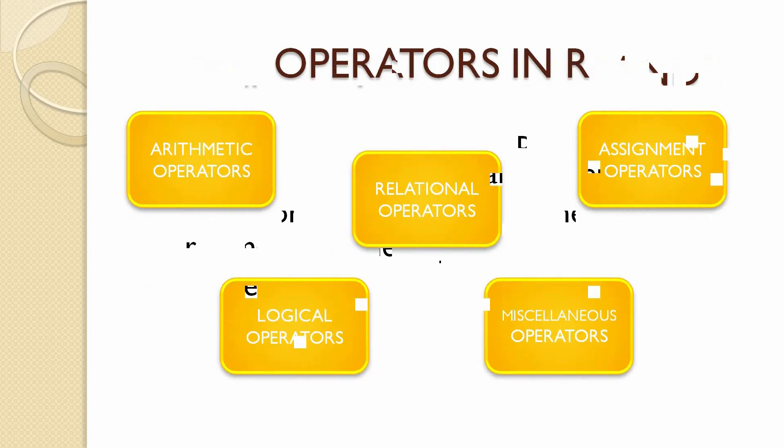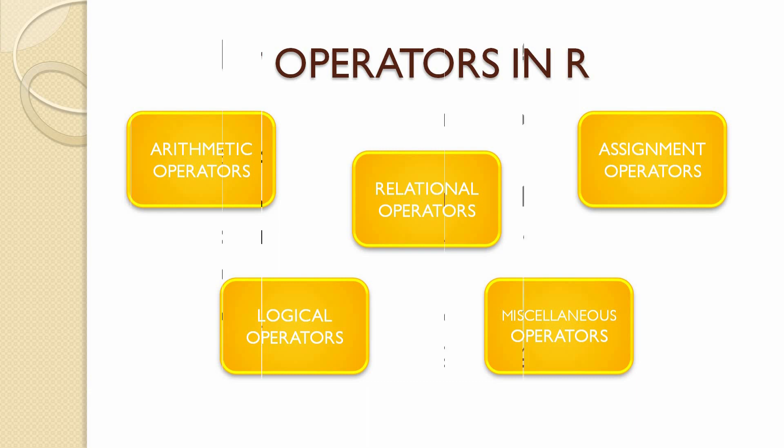In R, there are five types of operators: arithmetic, relational, assignment, logical, and miscellaneous operators. Let us know each of them briefly.